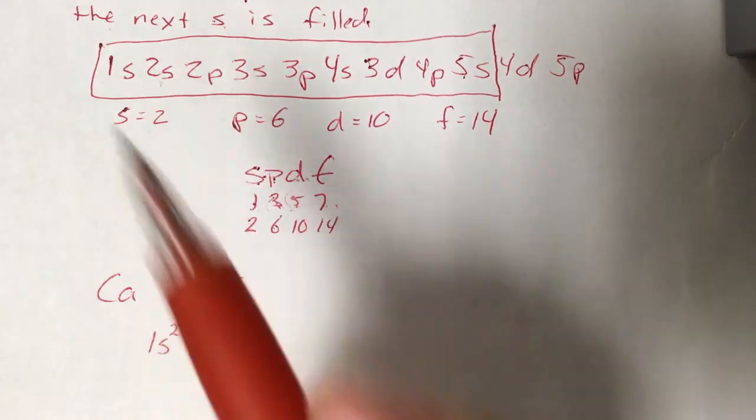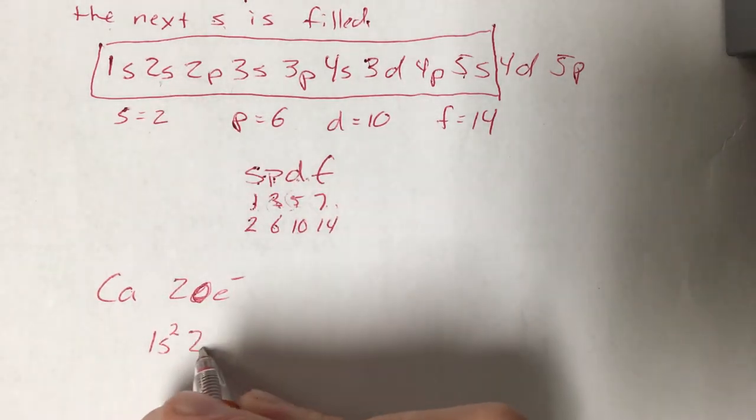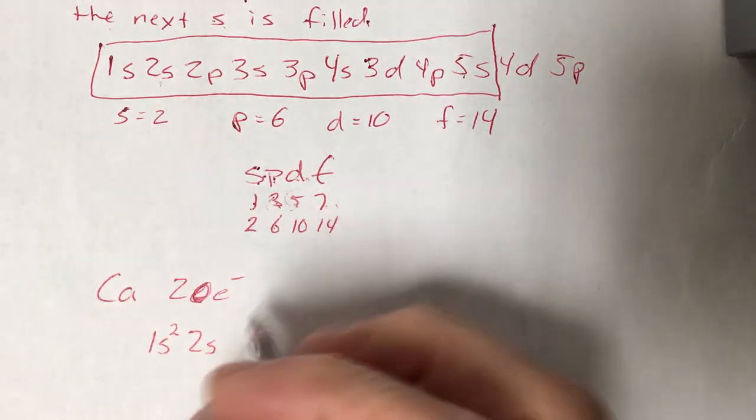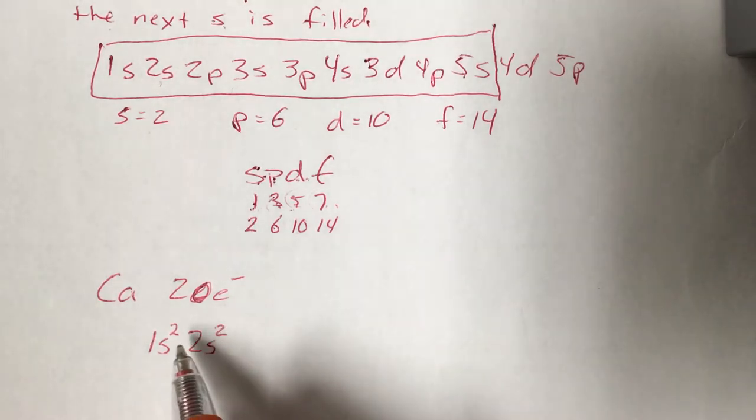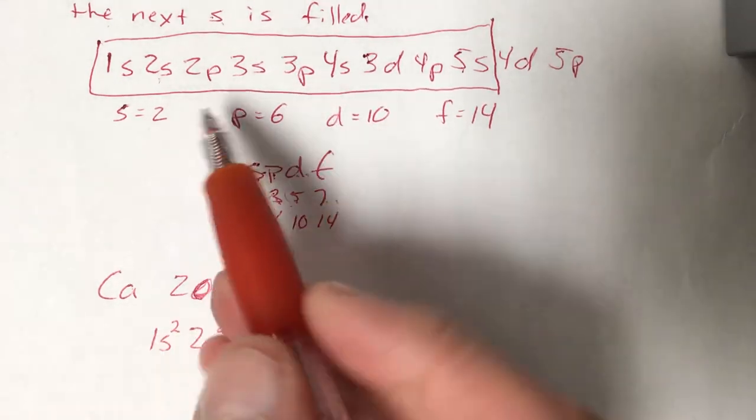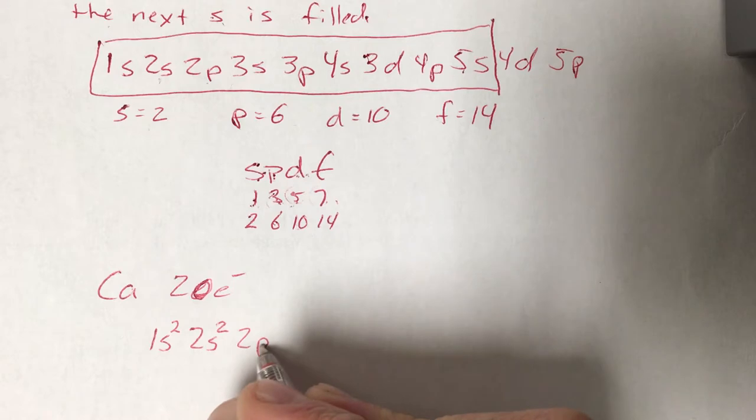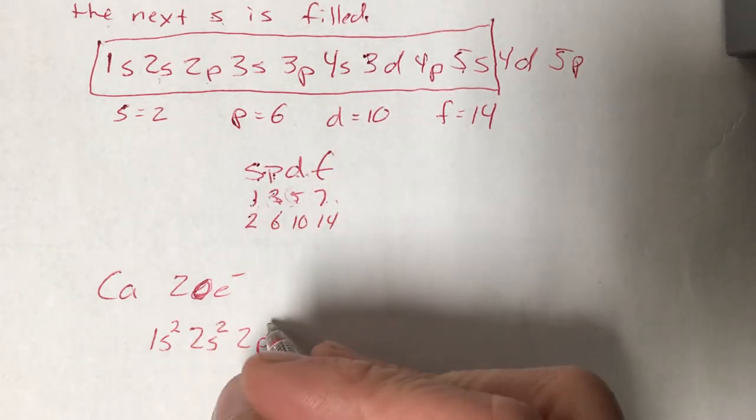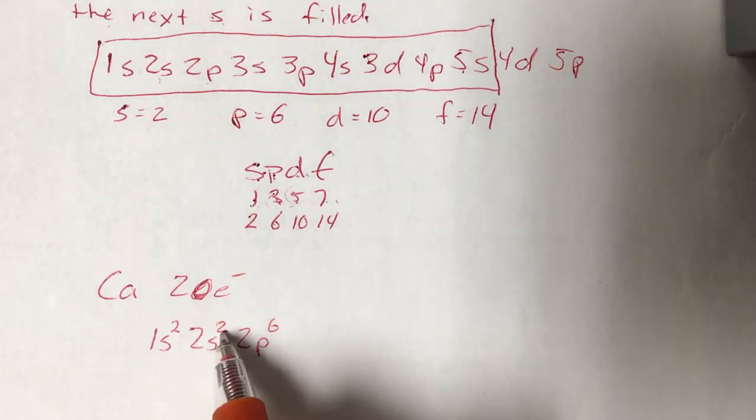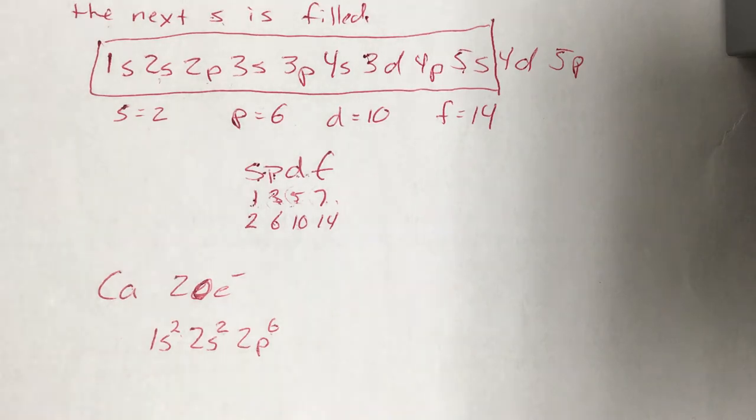My next orbital is 2s. It's an s orbital, so it holds 2 electrons. So I've got 4 of my 20 taken care of, I've got 16 to go. My next orbital is 2p. I can put 6 electrons in a p orbital. 2 plus 2 plus 6, I've got 10 electrons taken care of, I've got 10 more to go.